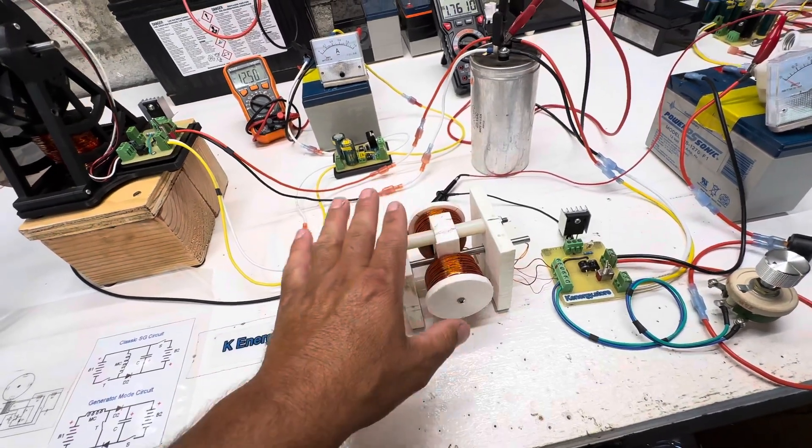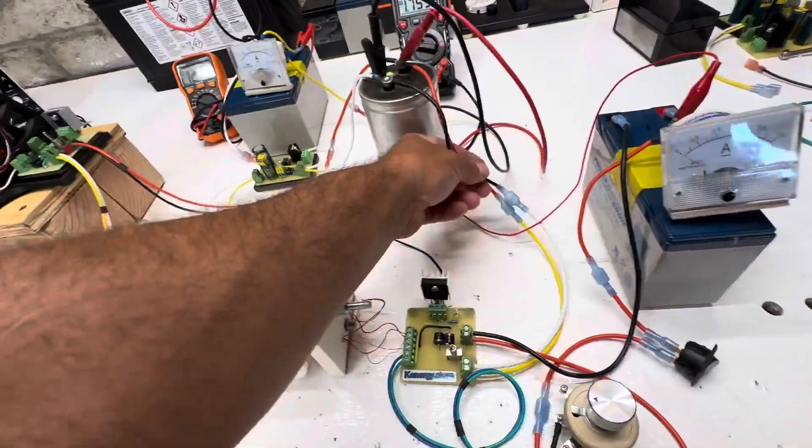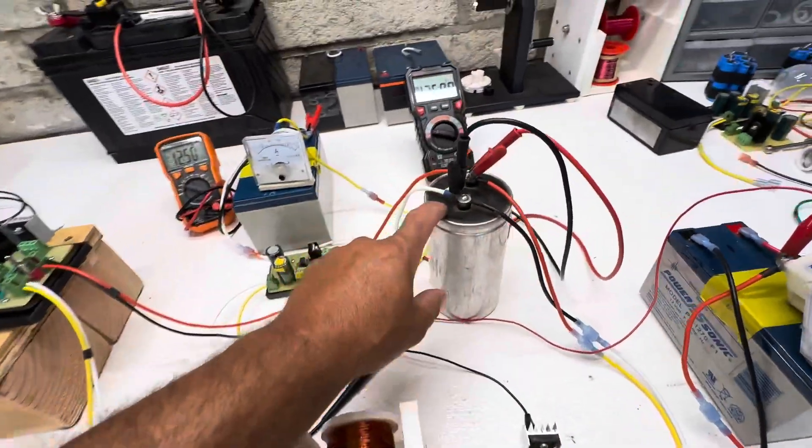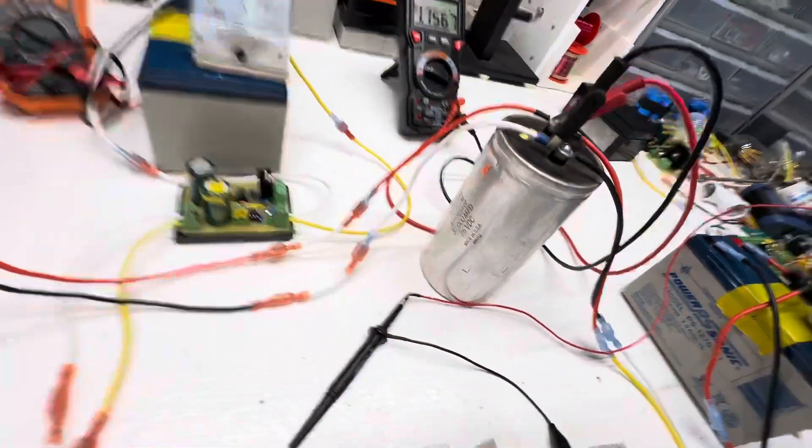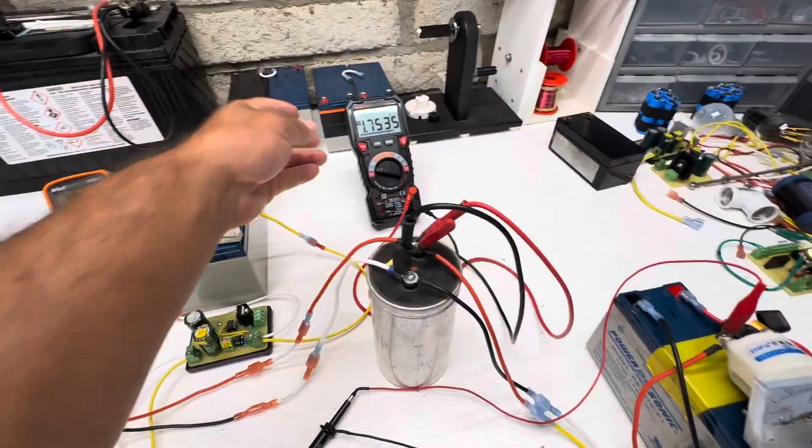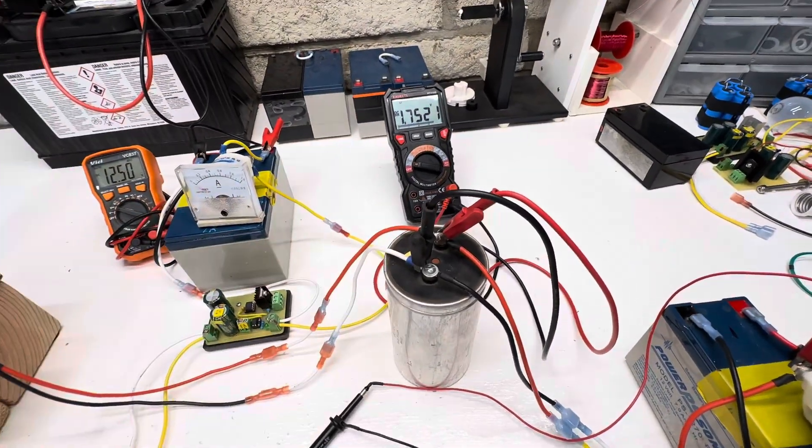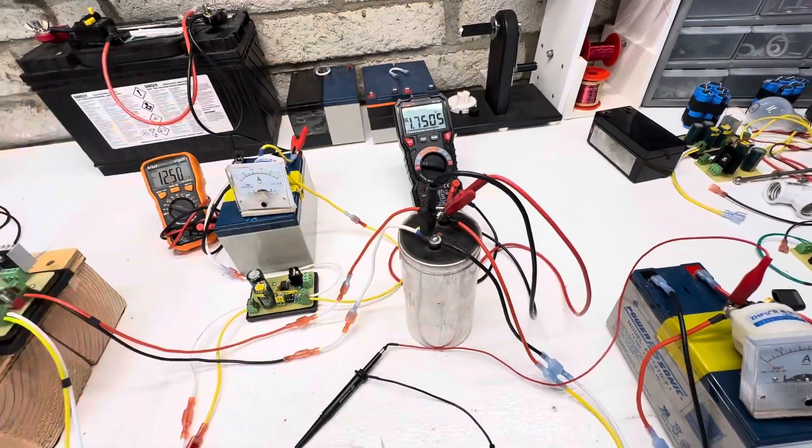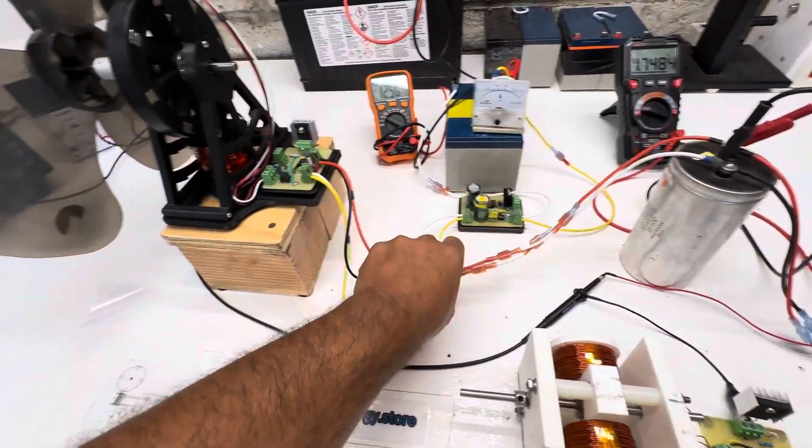So as this is pulsing on and off, the output is coming out through these yellow and white lines and we're going to be charging this capacitor. So right now we're sitting at 1.7 volts, so we'll be able to monitor that.